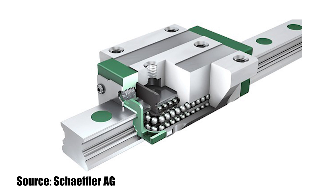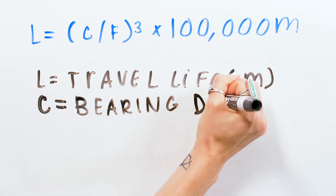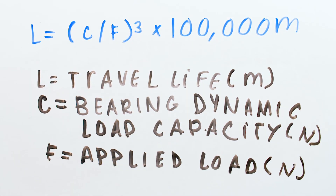So we're going to approach the L10 bearing life equation backwards to find out which bearing we need to select in order to get the required life in our application. Here's the bearing life equation for recirculating ball bearing linear guides in its standard form, where L is the bearing's travel life in meters, C is the bearing's dynamic load capacity in newtons, and F is the applied load, also in newtons.